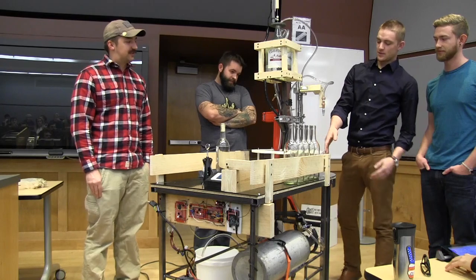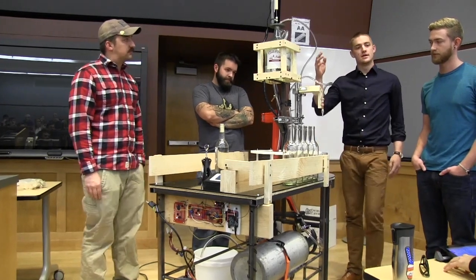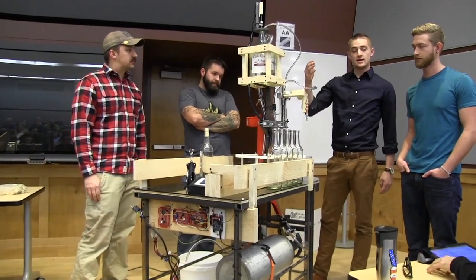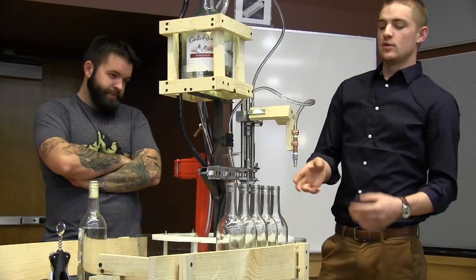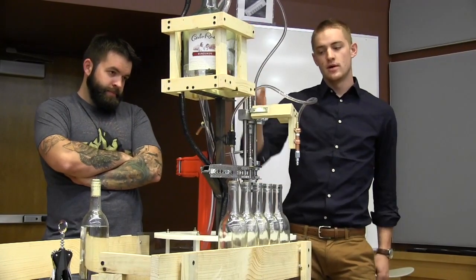The first bottle is going to move in and rotate to the first position where the nitrogen purge line is going to blow all of the air out of the bottle. Then it will rotate into position two where